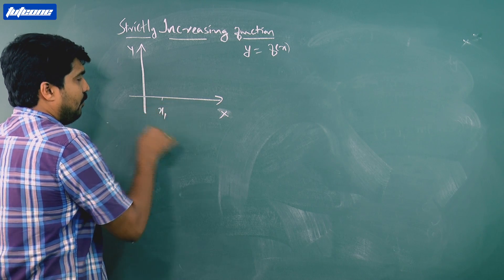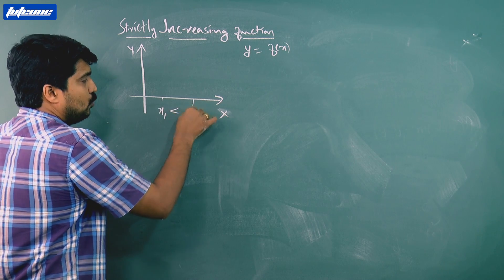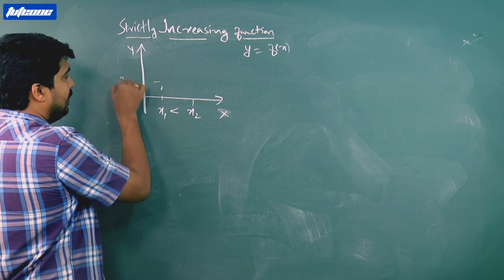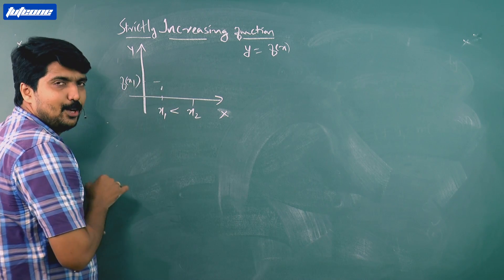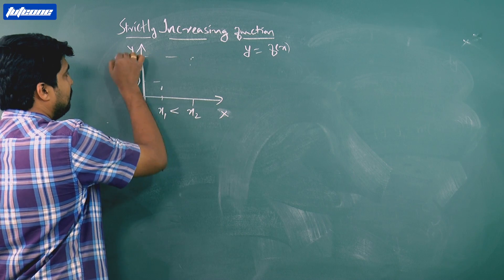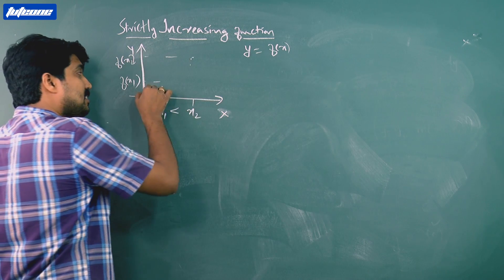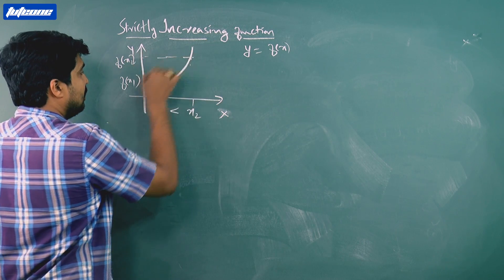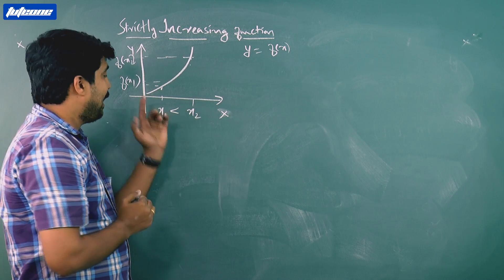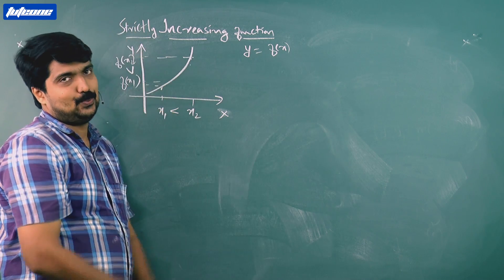When x increases, that means x1 less than x2 — two points. There is a corresponding point f(x1) and another point f(x2). So x increases, y also increases. This is a strictly increasing function: x1 < x2 implies f(x1) < f(x2).